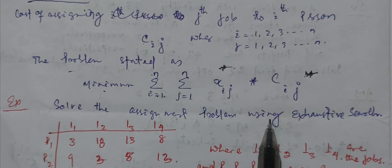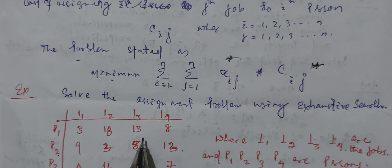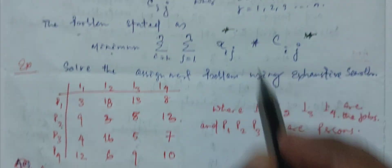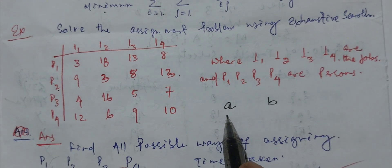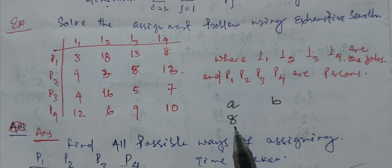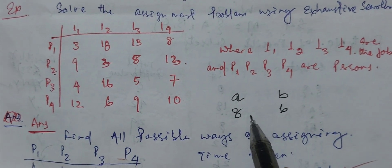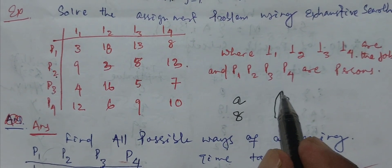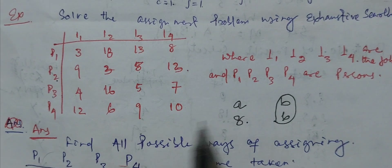Solve the assignment problem using exhaustive search. Suppose person A is taking 8 hours to complete a job and B is taking 6 hours for the same job to complete. So definitely we will give B to complete it. So this is what we will discuss here.